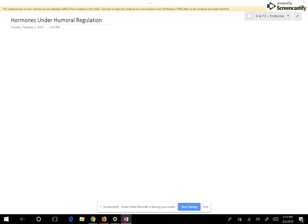We want to look at hormones that are under humoral regulation. This means that the hormone is going to be secreted in order to regulate an ion or a molecule. I'm going to write it like this because we only have one ion and one molecule.